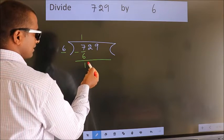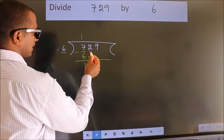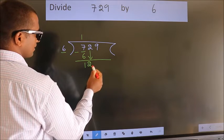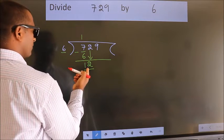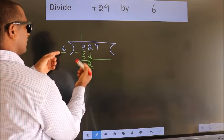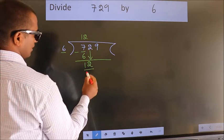After this, bring down the beside number. So 2 down, making 12. When do we get 12 in the 6 table? 6 twos, 12.